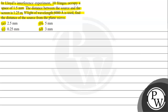So to understand this question, we need to understand the concept of Lloyd's mirror. According to this, Lloyd's mirror is basically a limiting case of Young's double slit experiment. What we have is a general setup.